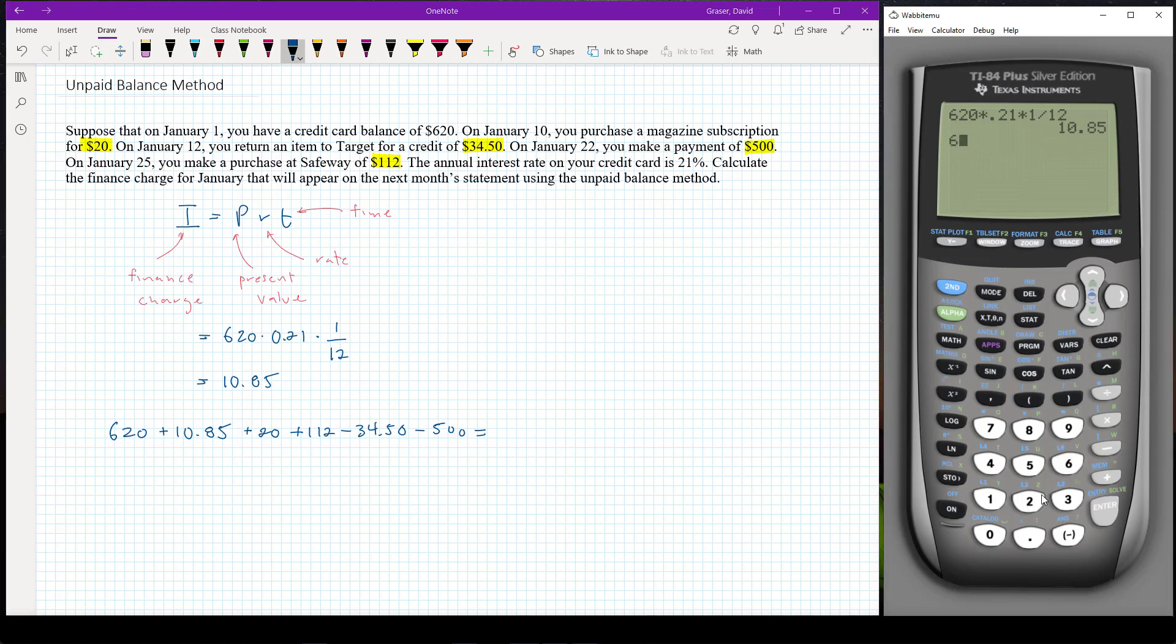So now let's put that into our calculator and figure out what our balance is at the end of the month. So six hundred and twenty, add in the finance charge of ten dollars and eighty five cents, we add the purchase of twenty, the purchase of one hundred and twelve. But now we're going to start doing our returns. So minus thirty four fifty and our payment minus five hundred. Press enter. We get a balance at the end of the month of two hundred and twenty eight dollars and thirty five cents.